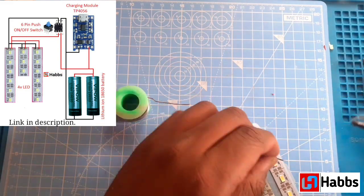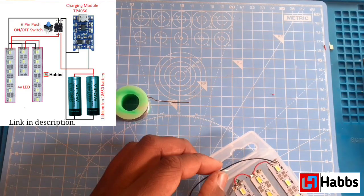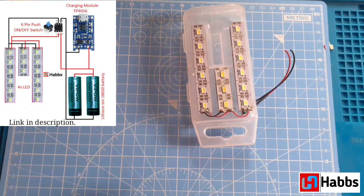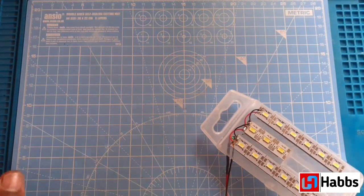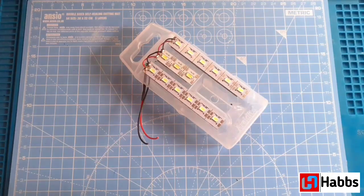Now our positive terminals are connected to the LED. Next we will connect the black wires to the LED. Now we have completed the LEDs wire.